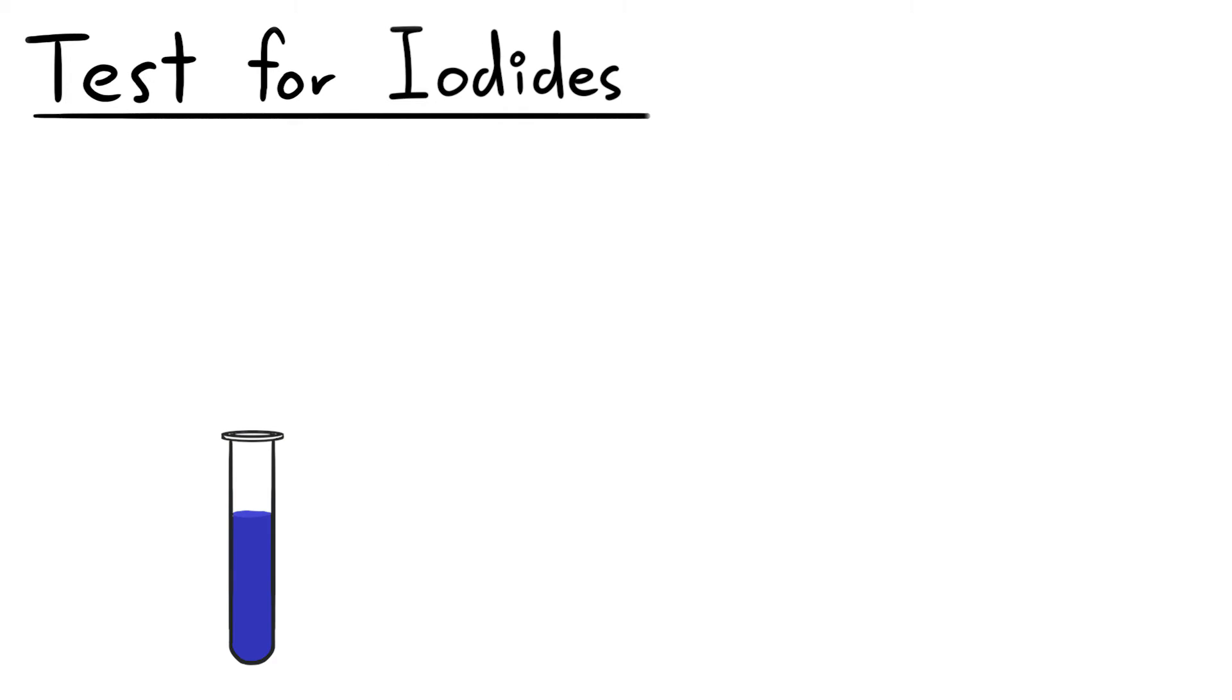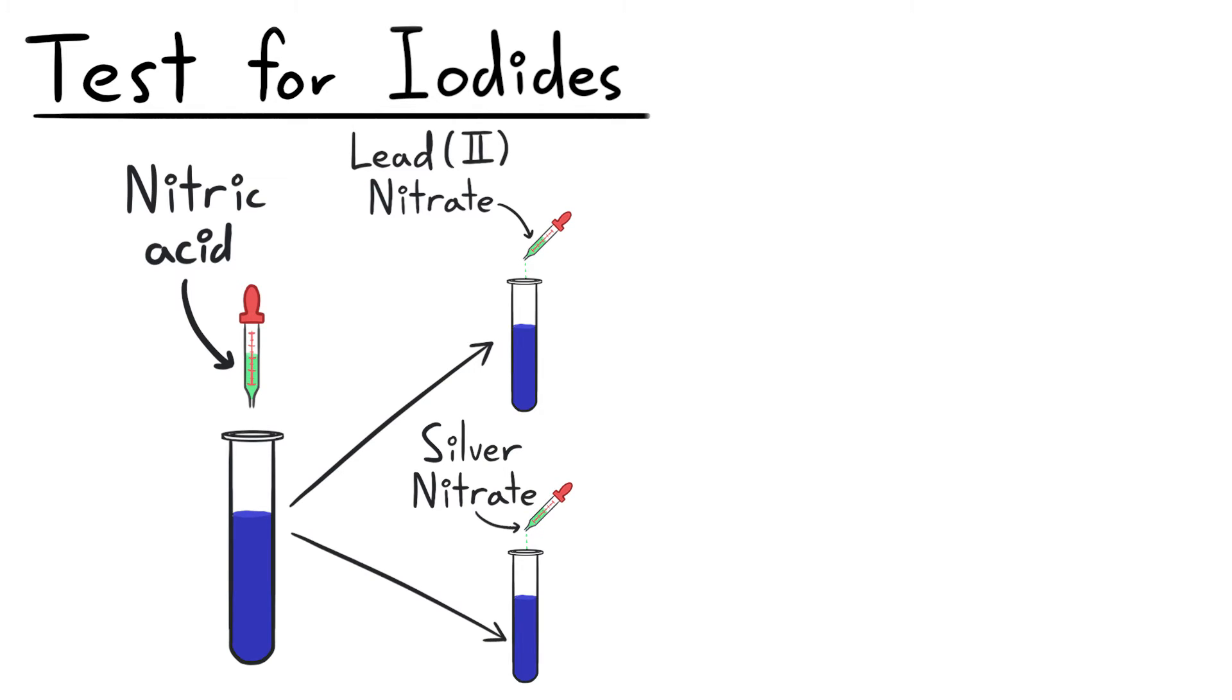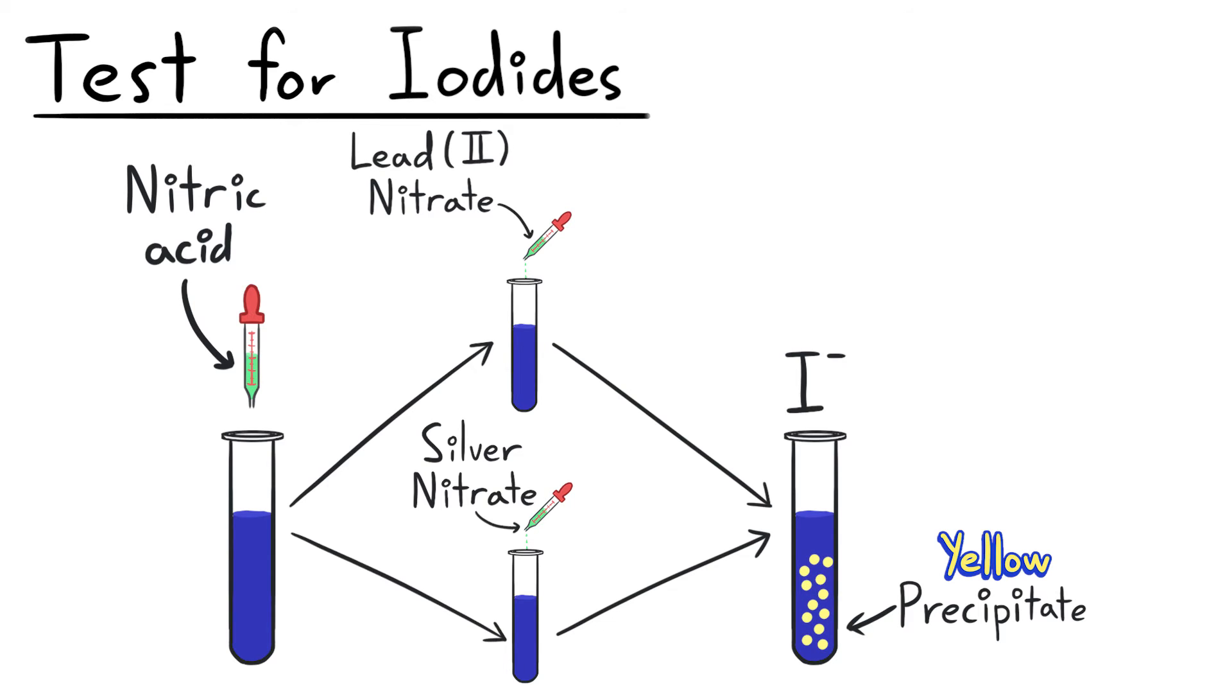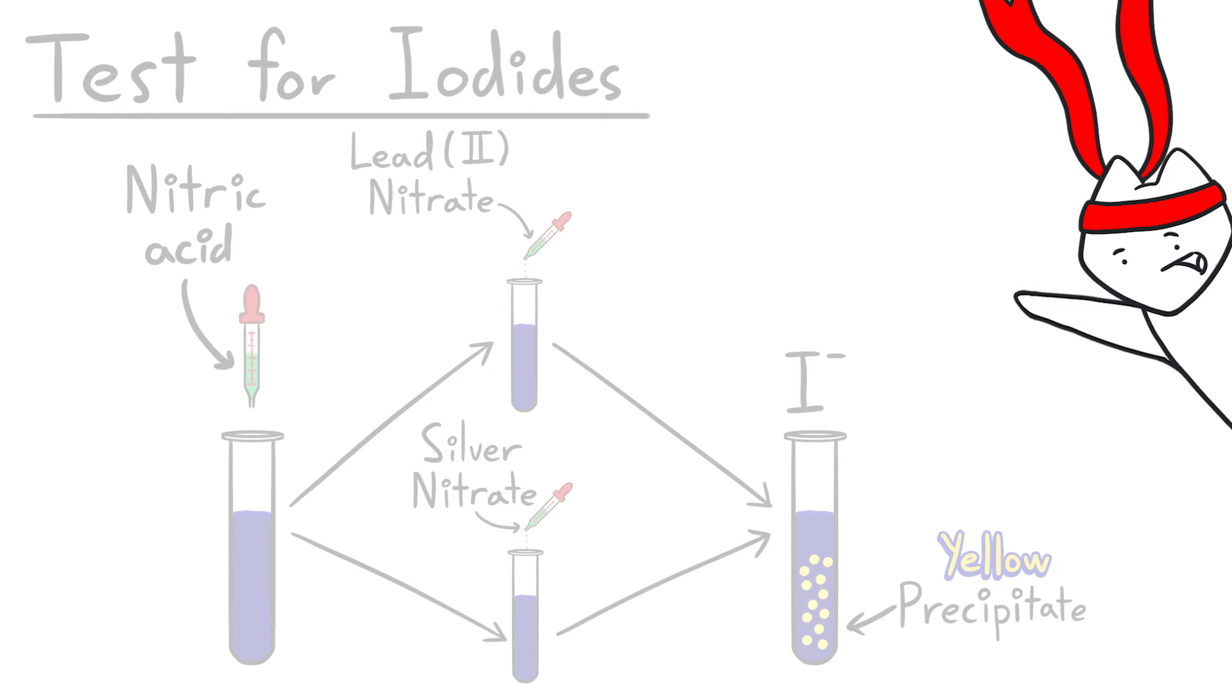To test for iodides, add nitric acid and lead nitrate or silver nitrate. Either will produce yellow precipitates, proving that iodide ions exist in the tested chemicals. Do note that in exams, yellow precipitate usually hints at the involvement of iodide ions.